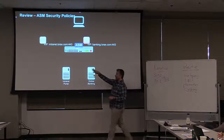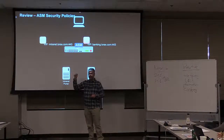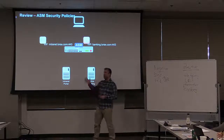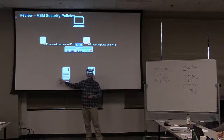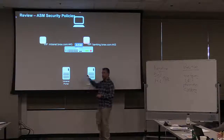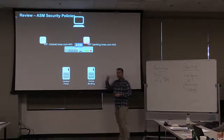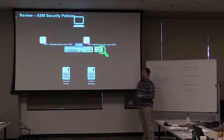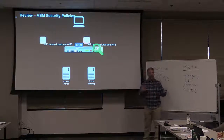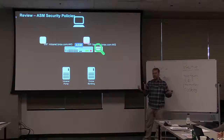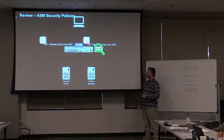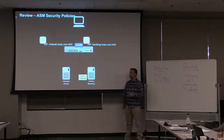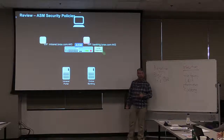Each security policy can have a variety of different security measures in place. Over there it's a yellow policy because it's not very secure — maybe I'm only using attack signatures. This one is much more secure, with a lot more things turned on. As the request comes in, that policy checks it to see if it's in any way malicious, and if it's not, it sends it down. We can do response checking as well.